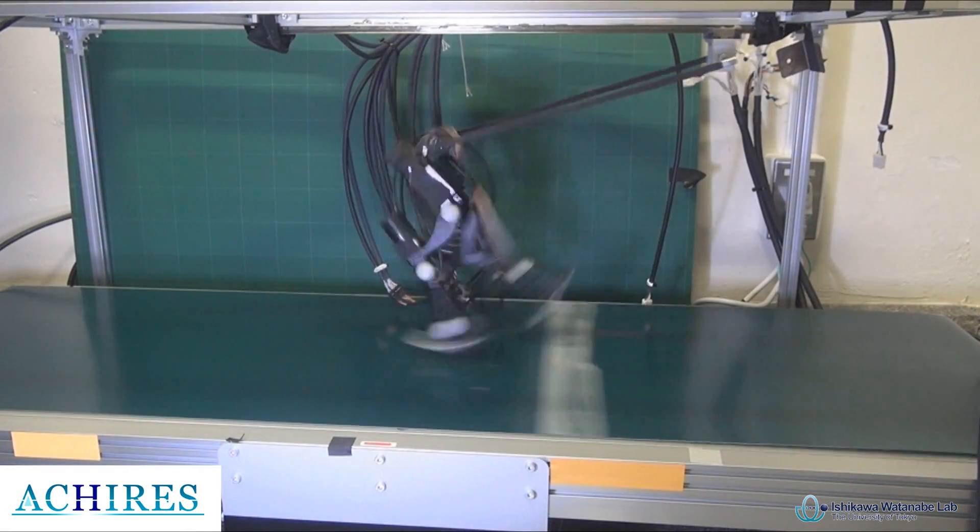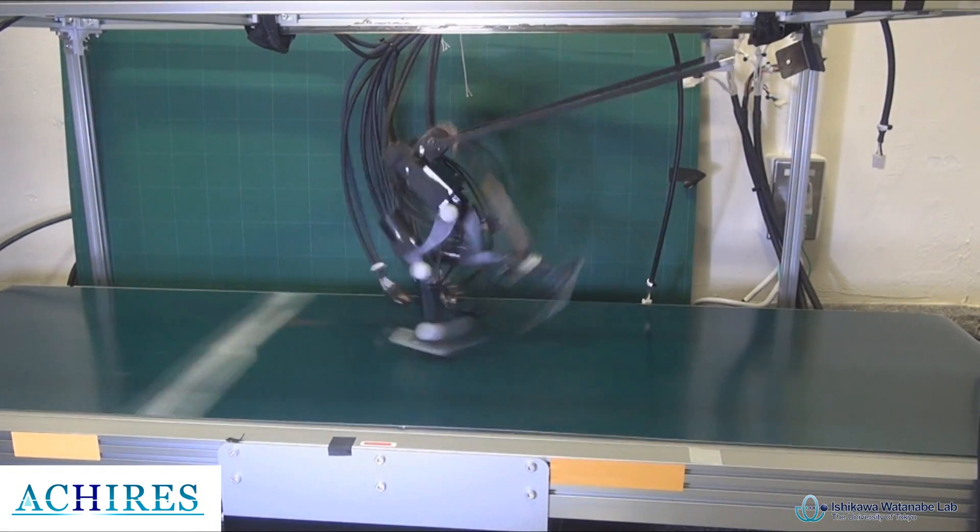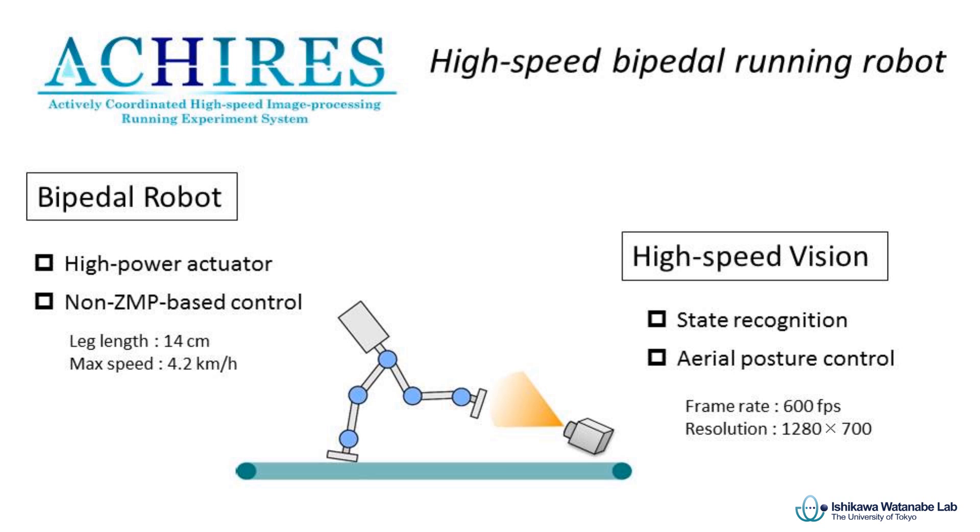Achilles is an actively coordinated high-speed image processing experiment system. It is composed of high-speed vision and actuators to achieve instantaneous recognition and behavior.